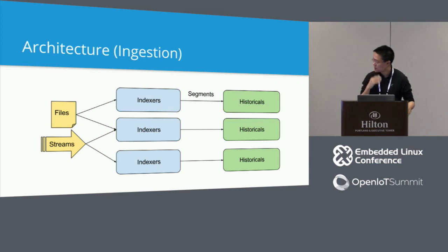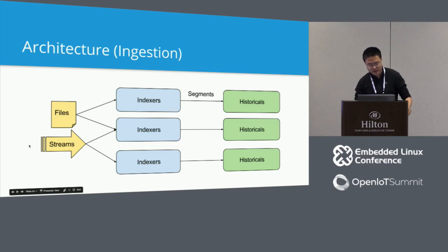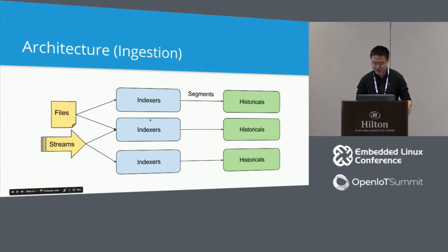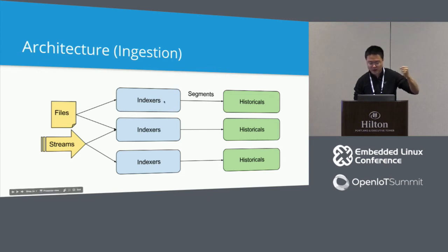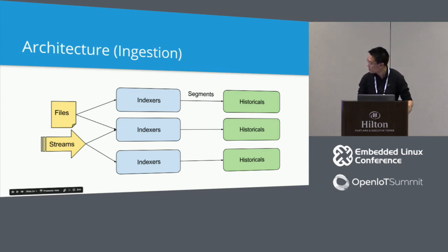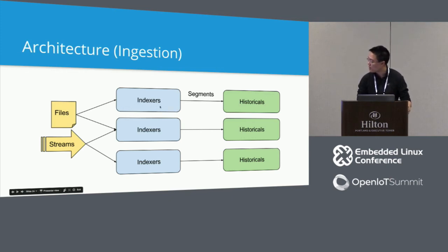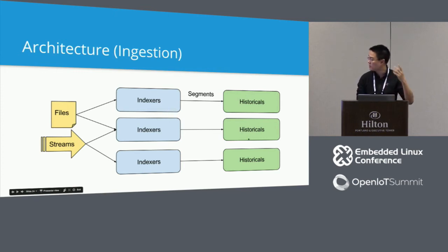At a high level, Druid partitions data first based on time, and these time-partitioned shards are called segments — they are actually immutable. Druid maintains a global index of time interval to shards, so each query has a notion of time associated with it. If you query for a week's worth of data, that might correspond to a couple of different shards. Within each shard, data is stored in a column-oriented fashion and then compressed, similar to other column stores. Each shard also contains different types of indexes for very fast filtering and groupings.